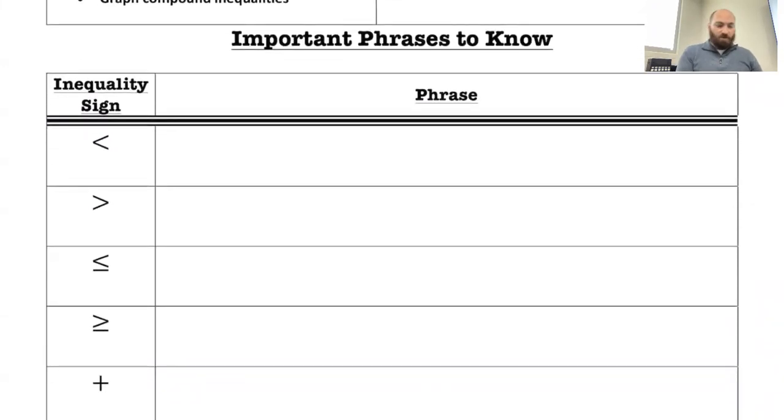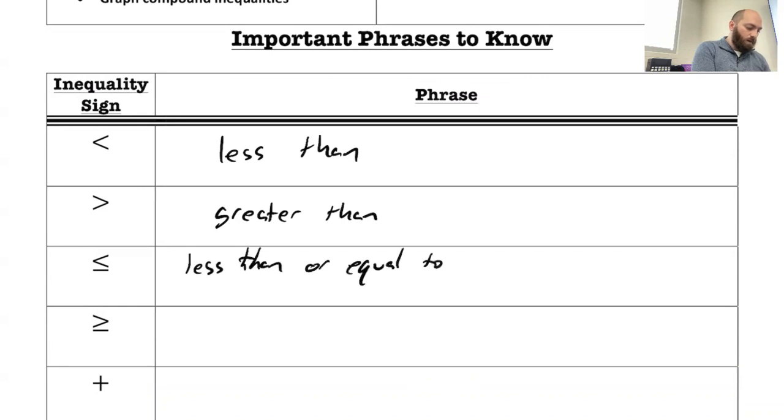These first four are really straightforward. We have less than, greater than, less than or equal to, and greater than or equal to.